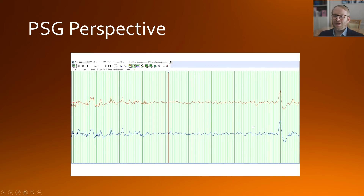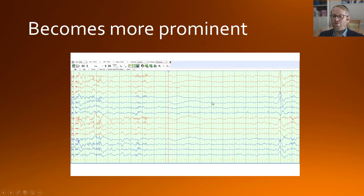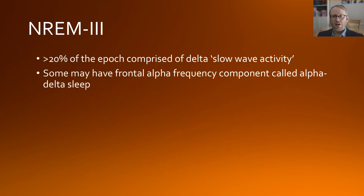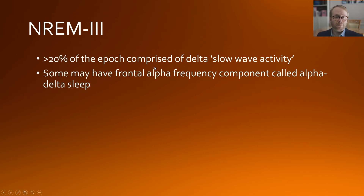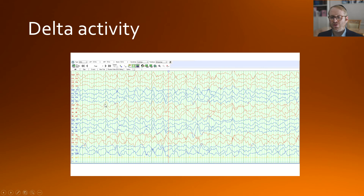More channels can be added to standard polysomnography or neurophysiology kit, but those are the bare bones. In non-REM 3 sleep, over 20% of an epoch will be comprised of delta slow wave activity. Some people may also have frontal alpha frequency components on top, known as alpha-delta sleep. You can see these large amplitude slow wave rhythms — sometimes with some spindle activity as well — this is slow wave sleep, or non-REM 3.